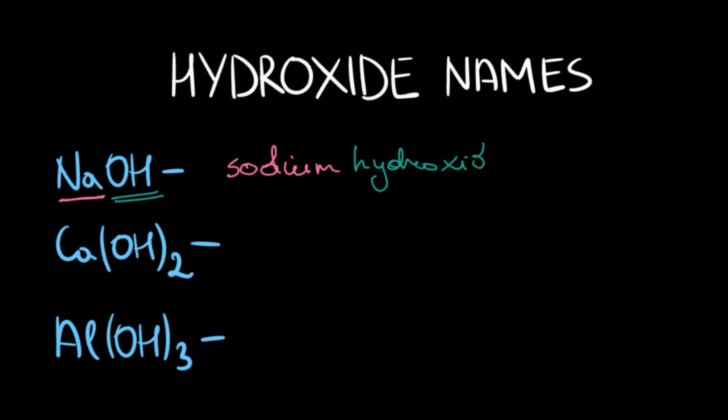So NaOH is sodium hydroxide, CaOH times 2 is calcium hydroxide, and AlOH times 3 is aluminum hydroxide.